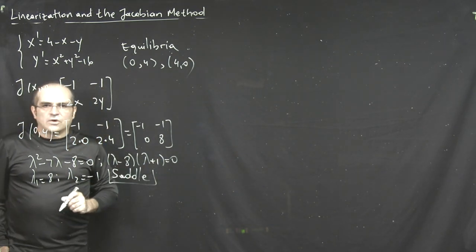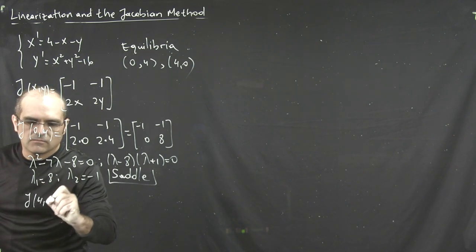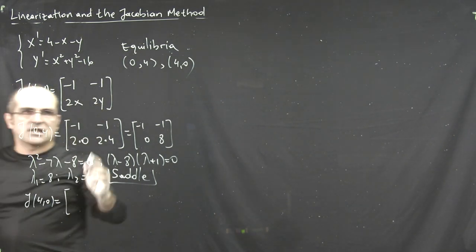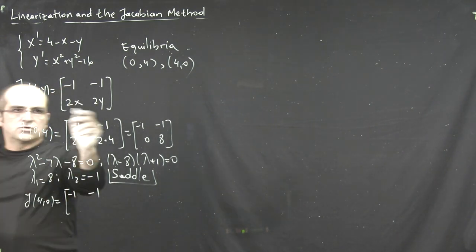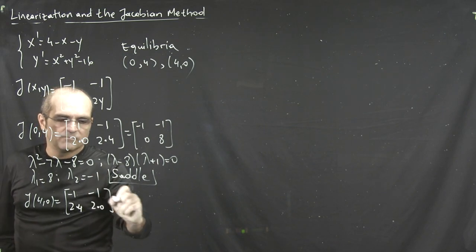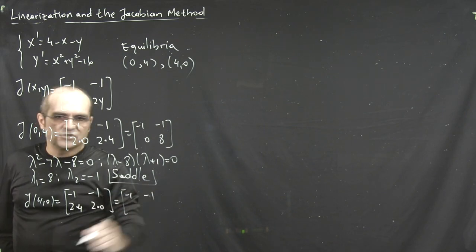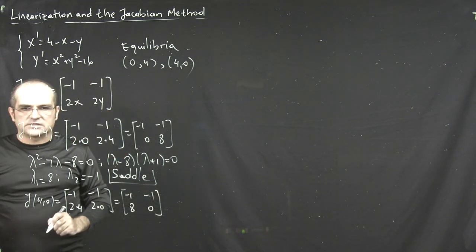And moving on, the second equilibrium point, (4,0). Going back to the Jacobian matrix now, again first row is the same. 2 times 4 and then 2 times 0. So the Jacobian at the second equilibrium point is minus 1 minus 1 and 8 and 0.